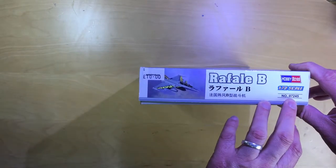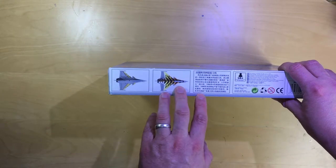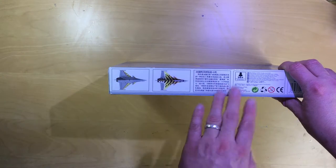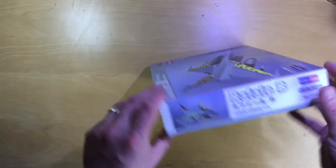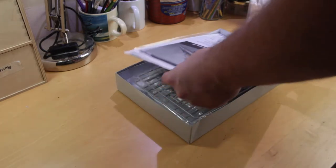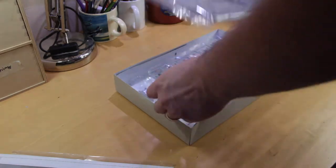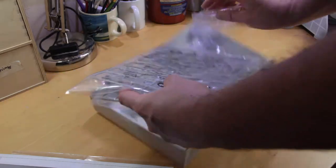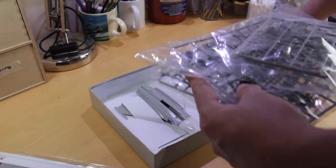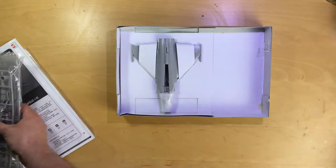The kit number is 87245. On the back here we've got a load of blurb and a couple of top views from the decal schemes. We have instructions and decals, then we've got sprues not in individual bags but kept separate - one, two, three, four bags with sprues. The model comes in quite a nicely packaged manner here. We'll start with the decals and instructions first.